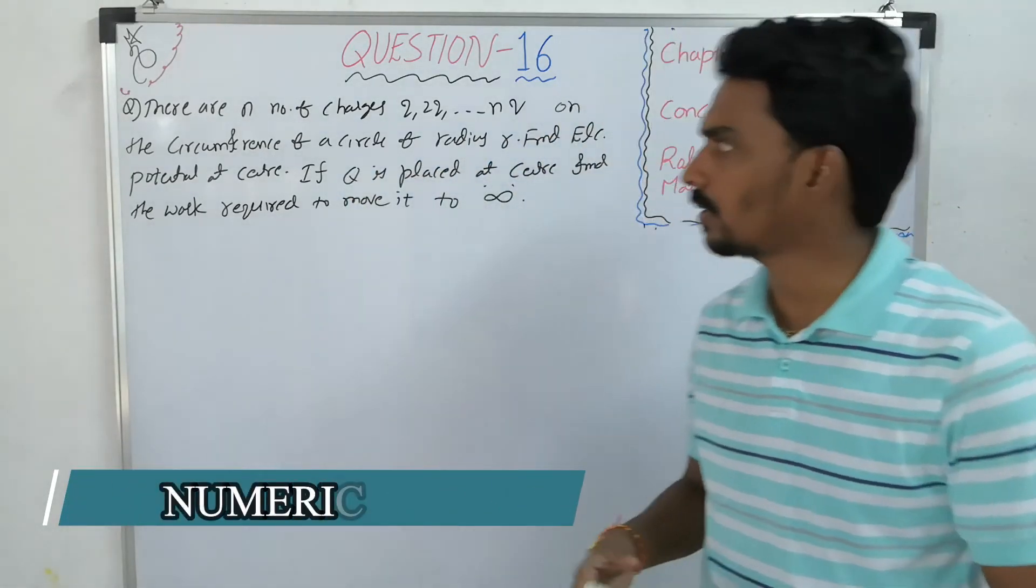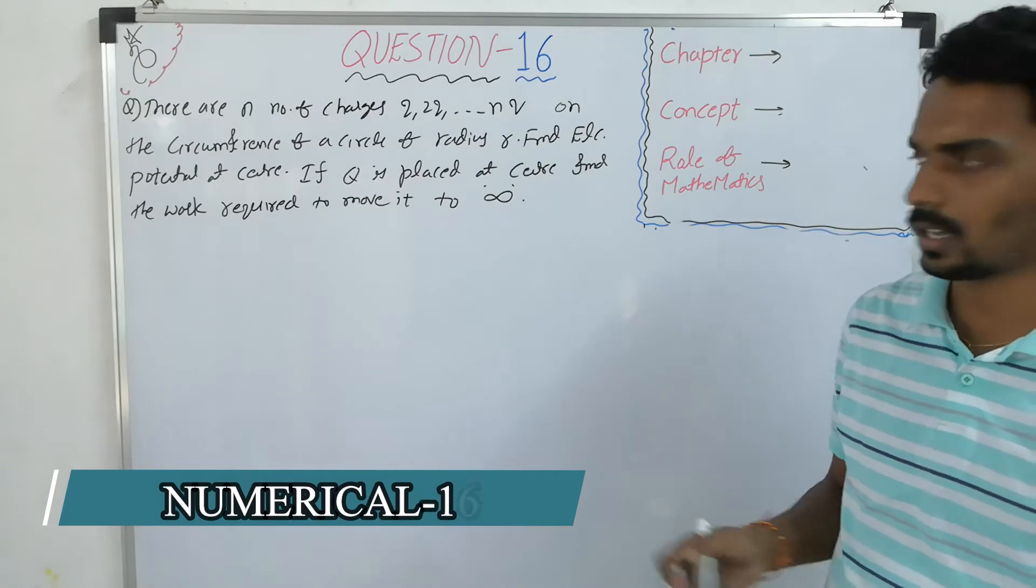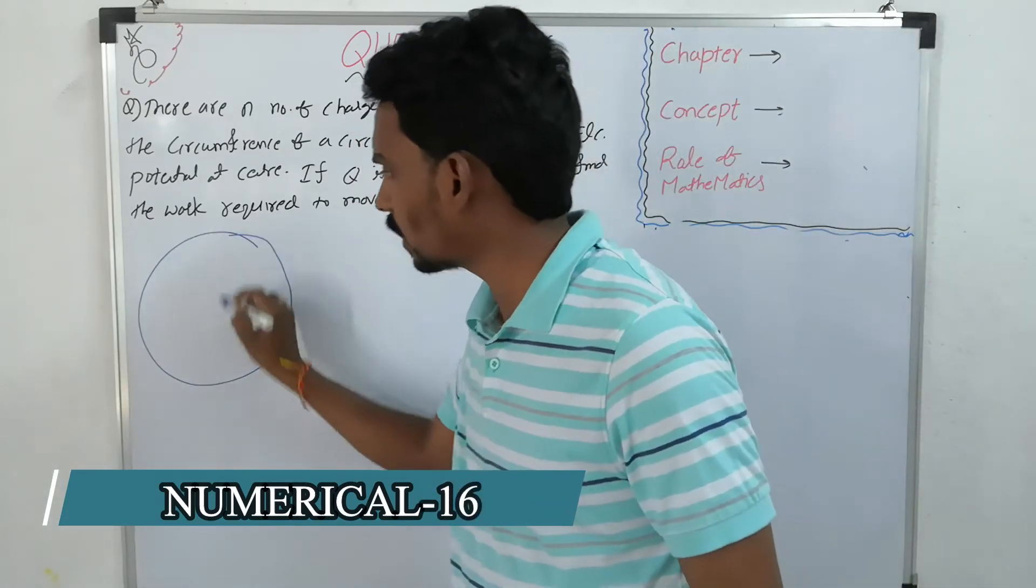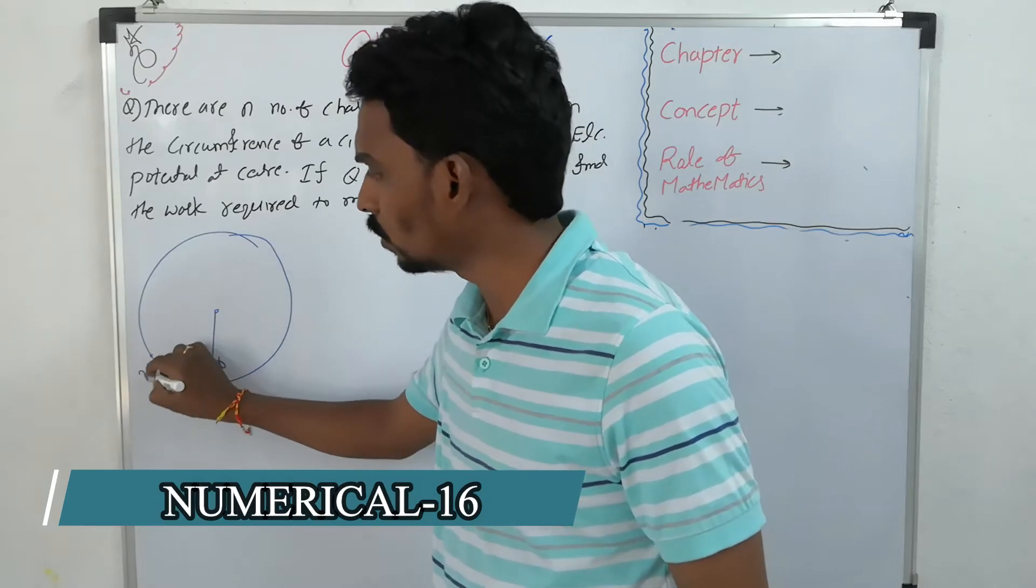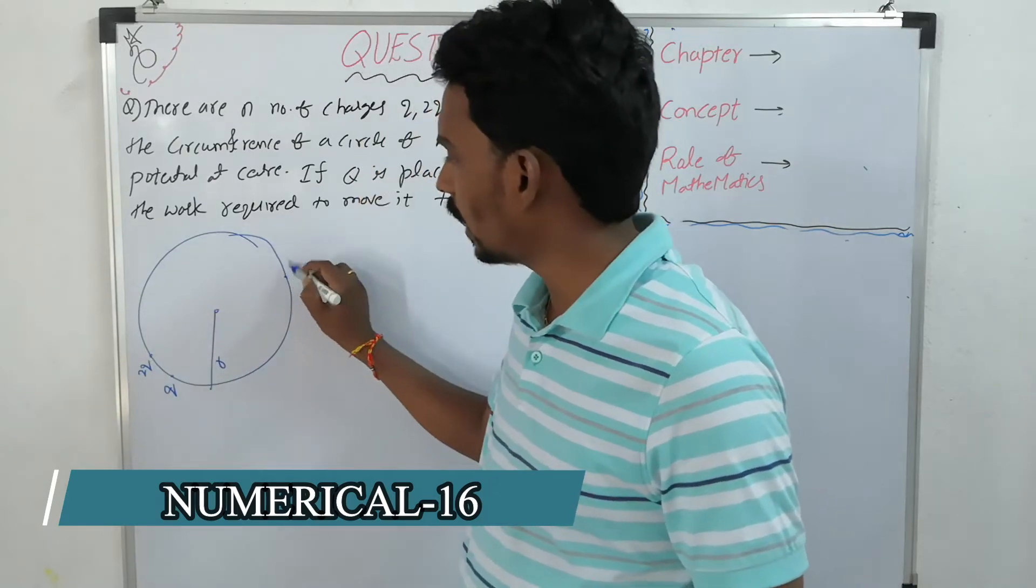on the circumference of a circle of radius R. So if there is a circle of radius R, then there are n number of charges Q, 2Q, and so on up to nQ.